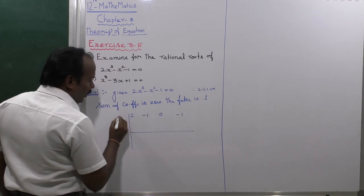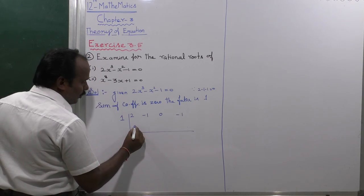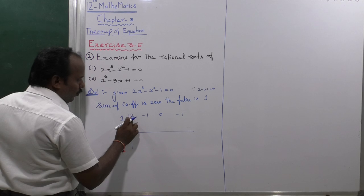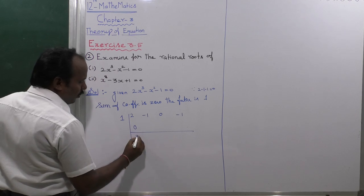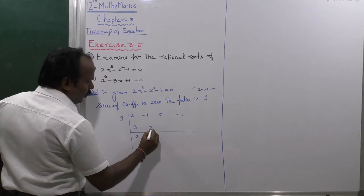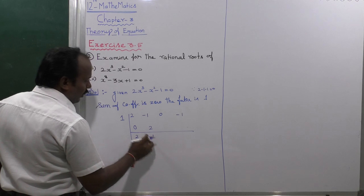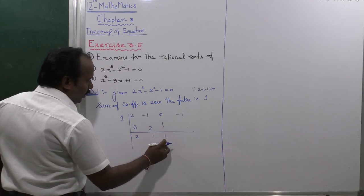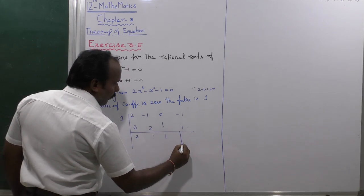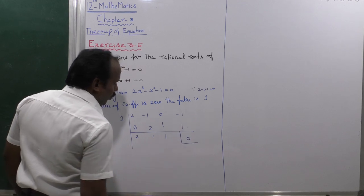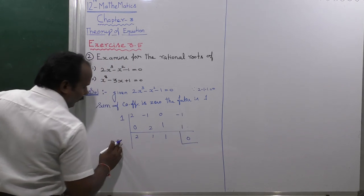By using 1 in the synthetic division: 2 plus 0 equals 2; 2 into 1 equals 2; minus 1 plus 1 gives 1; 1 into 1 equals 1; minus 1 plus 1 equals 0. The remainder is 0, confirming 1 is a factor.